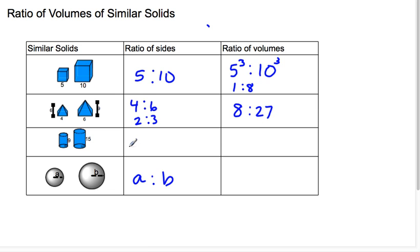Now I have two cylinders. Here I'm just going to take a look at the ratio of the sides. In this case I'm going to use the heights. And that simplifies, or that is 9 to 15, which simplifies down to 3 to 5.